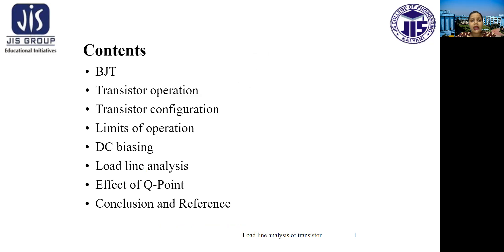These are the contents of today's class: BJT, a short recall of bipolar junction transistor. We will do that first, and then transistor operation, configuration, limits of operation, DC biasing, load line analysis, and effects of Q point — which is the operating point — and lastly, conclusion and reference.